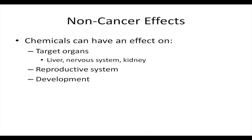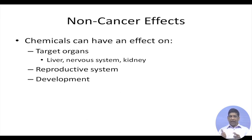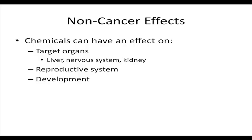When we talk about any impact coming from chemicals, you can have cancer impact — that is the most predominant one we get worried about — but at the same time there could be non-cancer effects too, because non-cancer effects also lead to problems. They can cause liver issues, nervous system problems. Take the whole issue of lead: if you go to a petrol pump you see 'unleaded petrol' or 'unleaded gasoline' — that means there was lead in our petrol at some point.